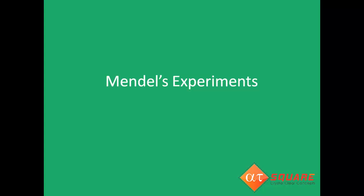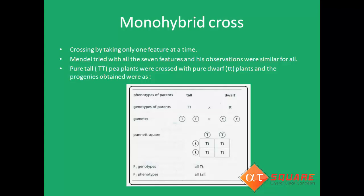Mendel crossed pure-breeding varieties by taking only one feature at a time — monohybrid cross — and two features at a time — dihybrid cross. Monohybrid cross refers to crossing by taking only one feature at a time. Mendel tried monohybrid cross with all seven features and his observations were similar for all. Pure tall plants (TT) were crossed with pure dwarf plants (tt). The gametes produced by pure tall are T and T, and by pure dwarf are t and t. By plotting a Punnett square, the phenotypic ratio obtained in F1 is 4:0, i.e., 4 tall and no dwarf. The genotypic ratio is also 4:0, i.e., 4 heterozygous tall individuals. In F1, all offspring show the dominant trait.